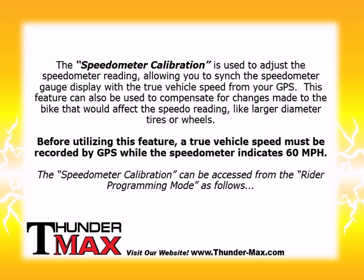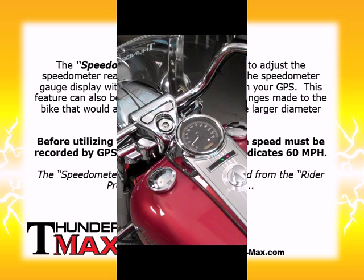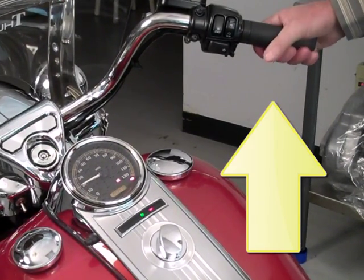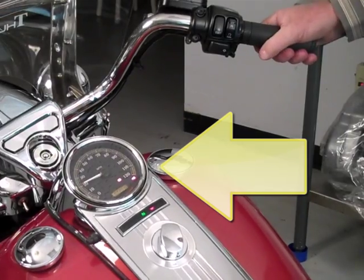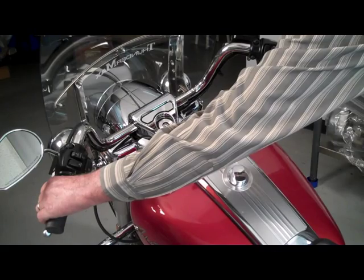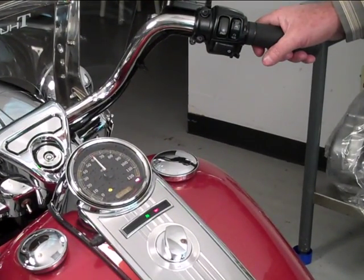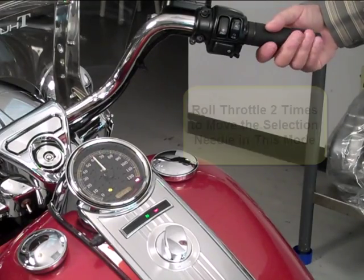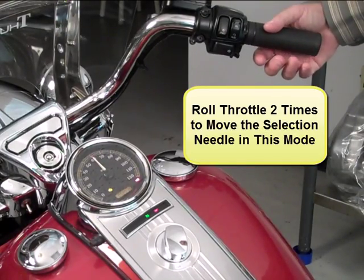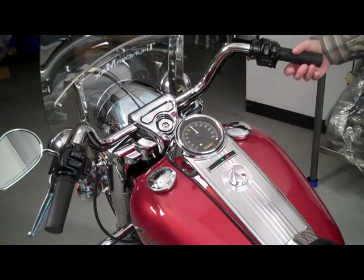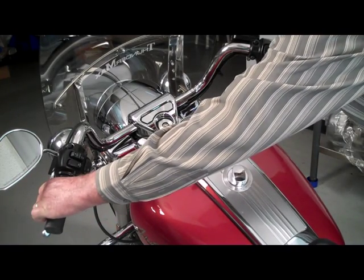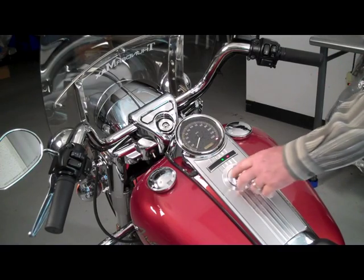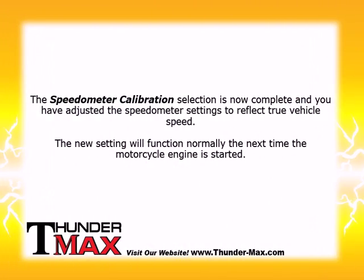The speedometer calibration can be accessed from the Rider Programming Mode as follows. While in Rider Programming Mode, twist the throttle to achieve a speedometer reading of 30 mph. Fully pull and release the clutch to activate the category selection. The speedometer will display the actual vehicle speed relative to 60 mph. Use the throttle twist grip to choose the actual vehicle speed recorded. Roll the throttle forward or back to move the selection needle. Fully pull and release the clutch to confirm your selection. Turn the ignition off, then turn the ignition on and start the bike. The speedometer calibration selection is now complete and you have adjusted the speedometer settings to reflect true vehicle speed.